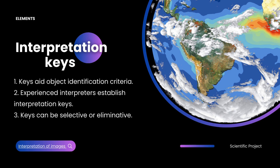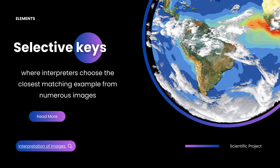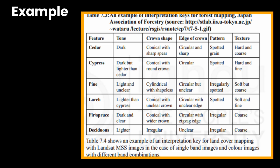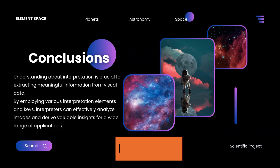Now let's discuss what interpretation keys are. They aid object identification criteria. Experienced interpreters establish interpretation keys, which can be selective or eliminative. Selective: interpreters choose the closest matching example from numerous images. Eliminative: progresses from broad to specific characteristics, often using dichotomous choices to identify objects. Some examples of element interpretation using the keys are given in the table.